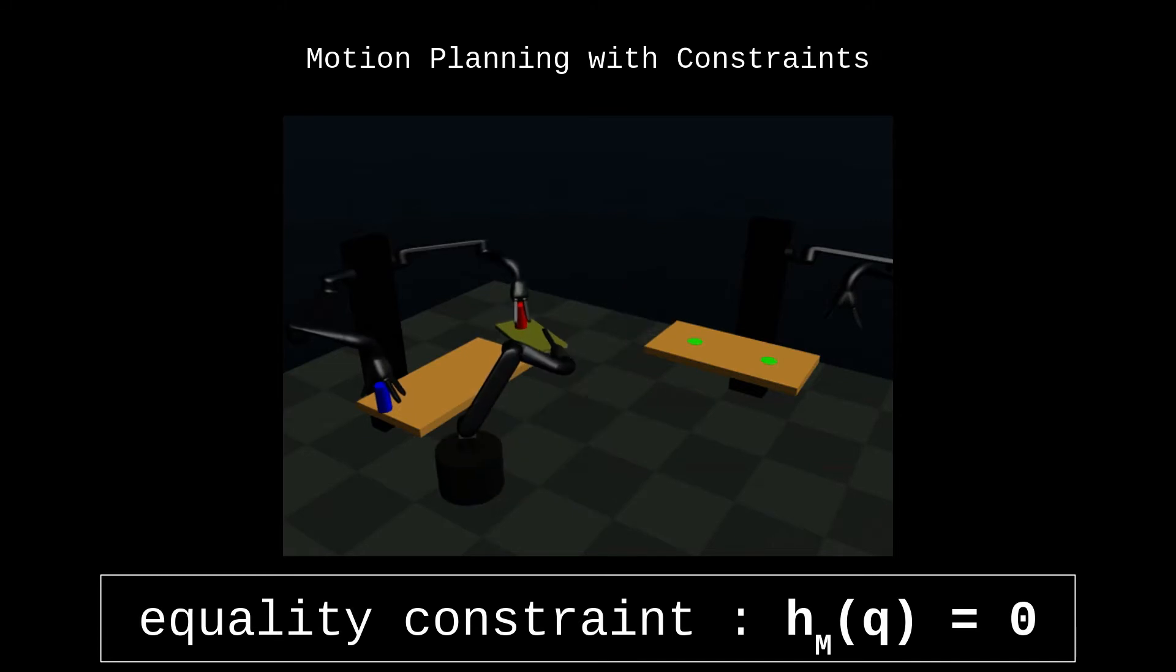Many robotic tasks require constrained motions such as maintaining contact with a handle or keeping a cup or bottle upright while transporting.